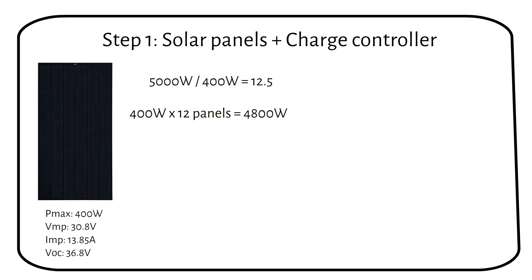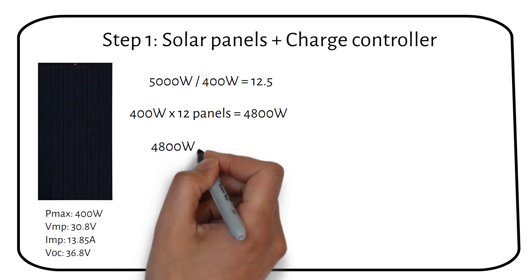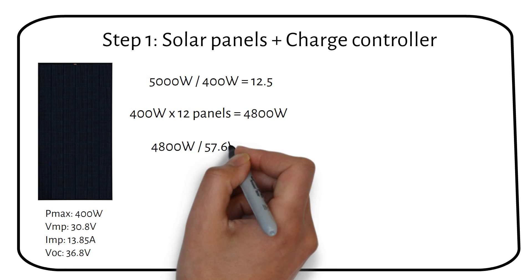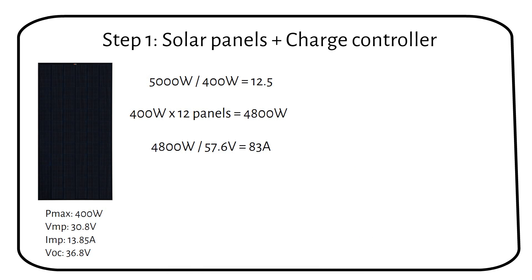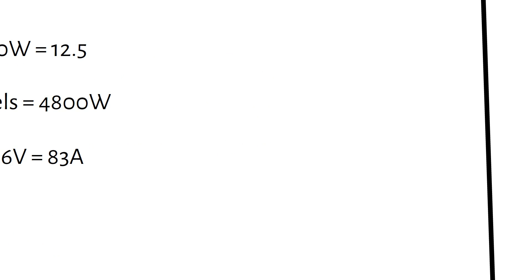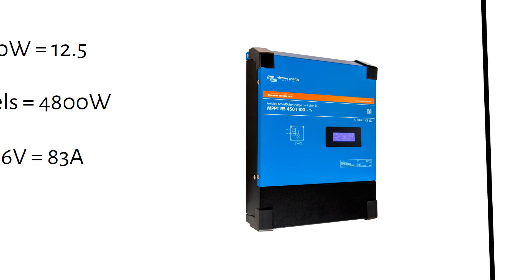Now we must calculate the charging current to choose the right charge controller. To find the charging current, divide the total solar power, which is 4800W, by the charging voltage of 57.6V. This gives us 83A. We will use a charge controller rated for 100A. A good choice is the Victron 450V 100A charge controller.